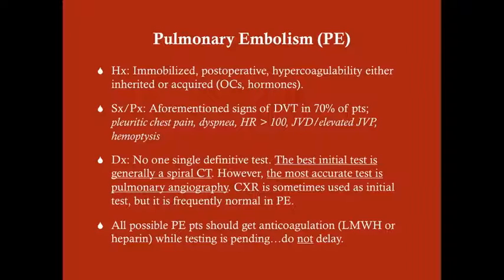Why do these symptoms occur? When you have an embolus traveling up to the heart, passing through the right atrium and right ventricle, and getting lodged in the pulmonary circulation, it increases pressure backwards. You get increased right atrial pressure, increased right venous pressure, and increased pressure in the veins — notably the jugular veins — which explains the elevated jugular venous pressure. Hemoptysis may be seen in really severe cases. The key findings to remember are tachypnea and tachycardia.